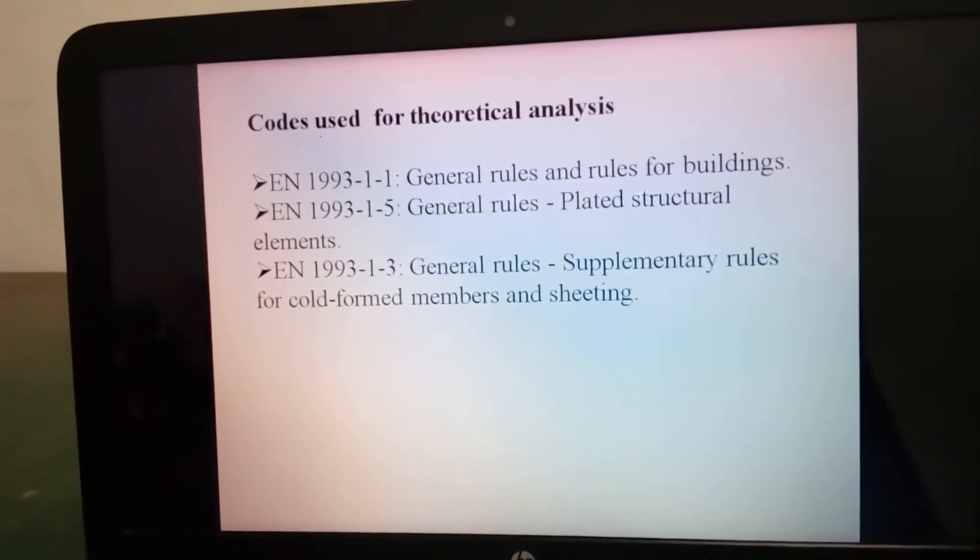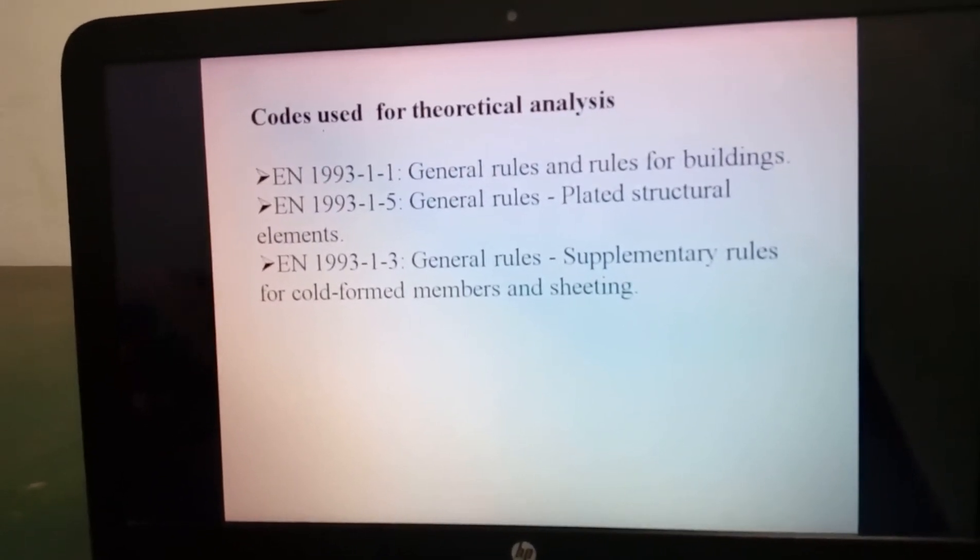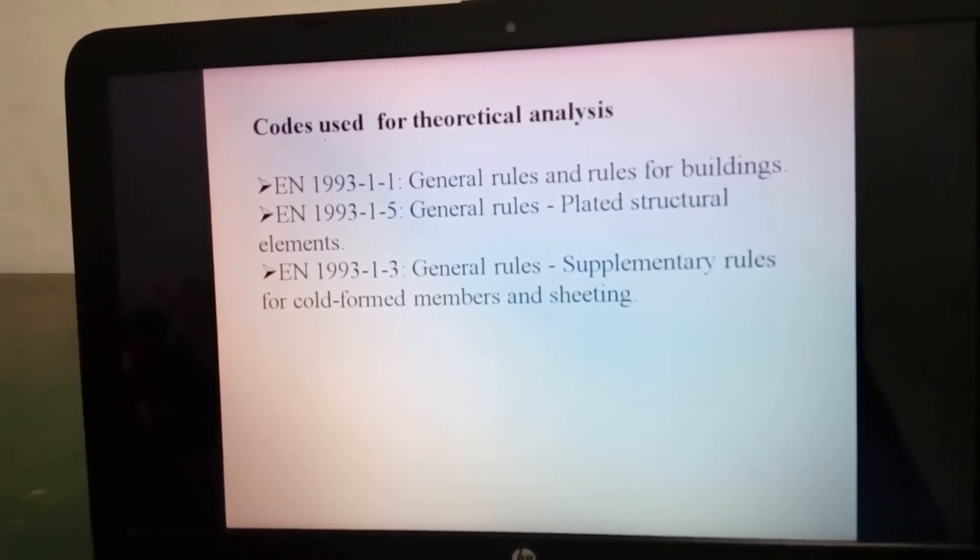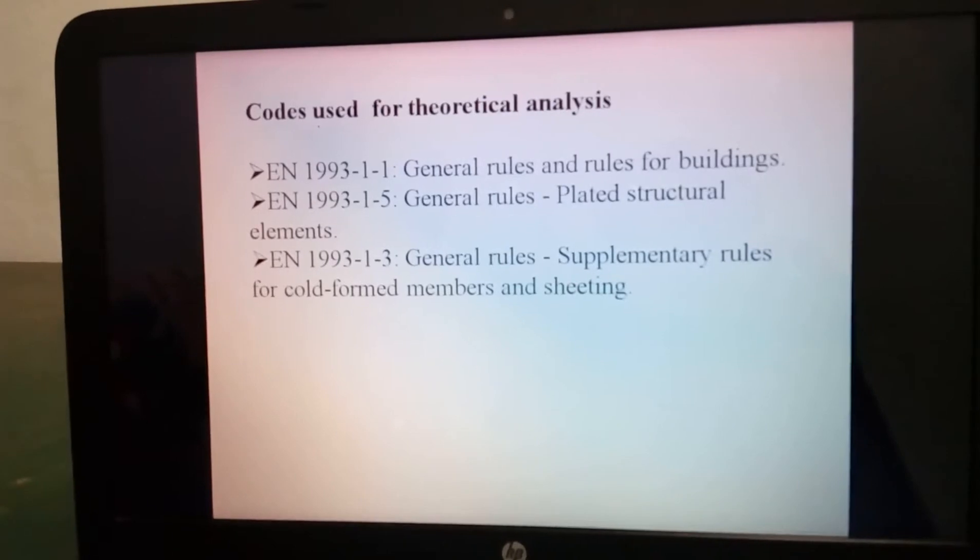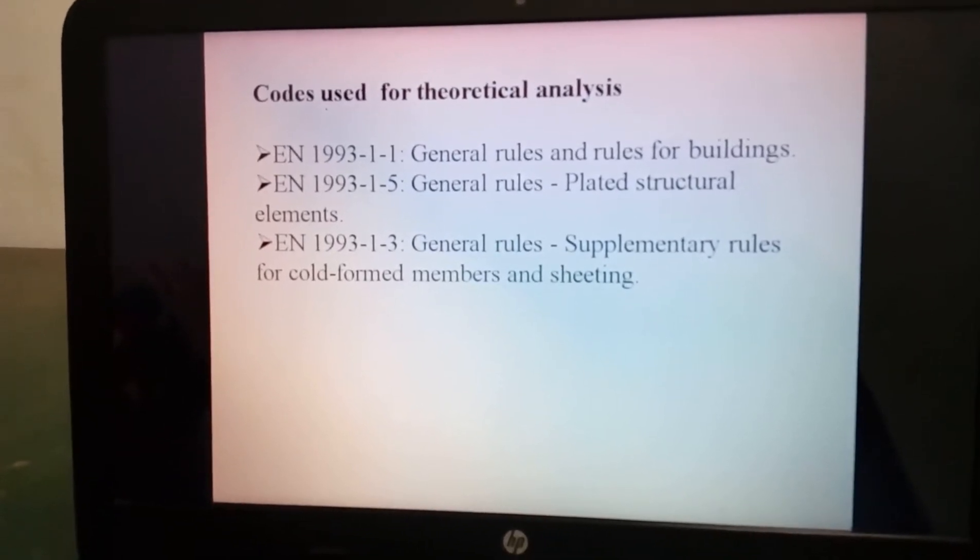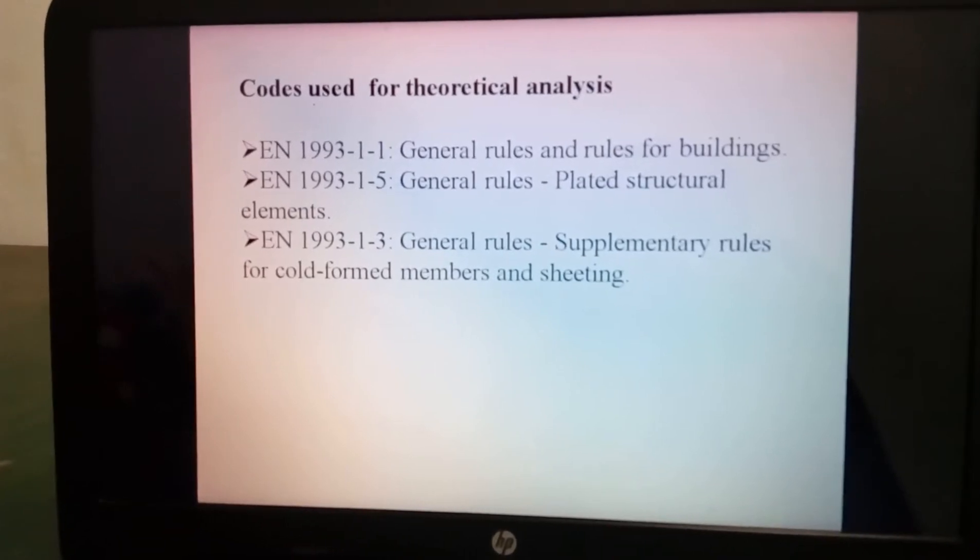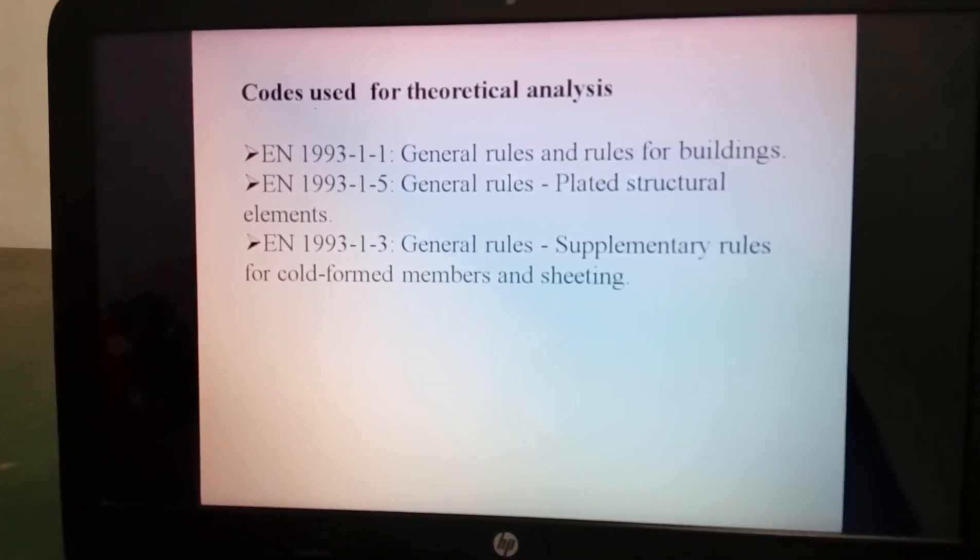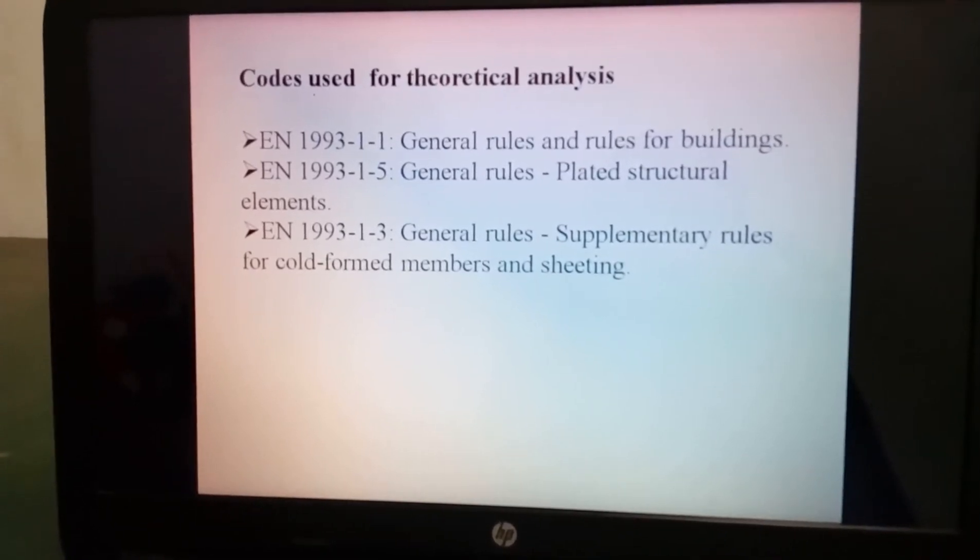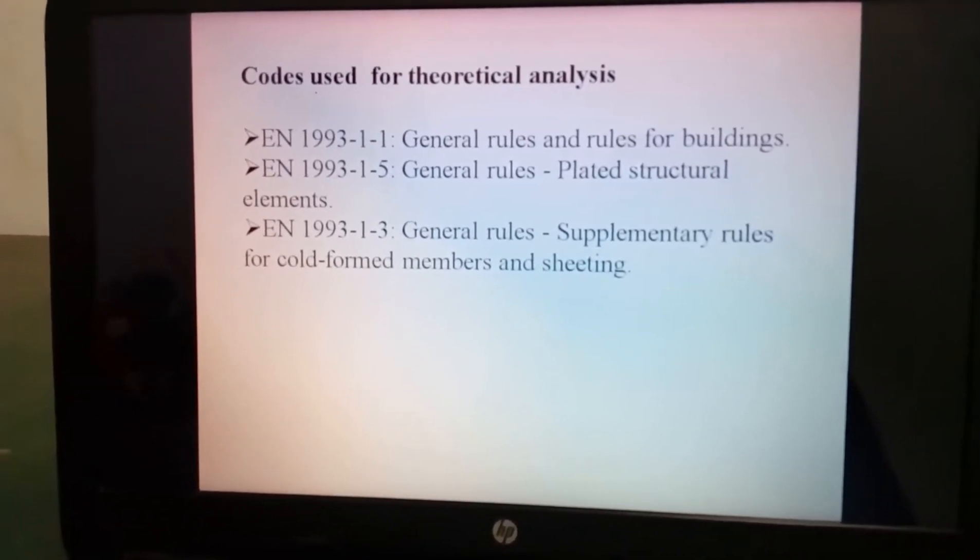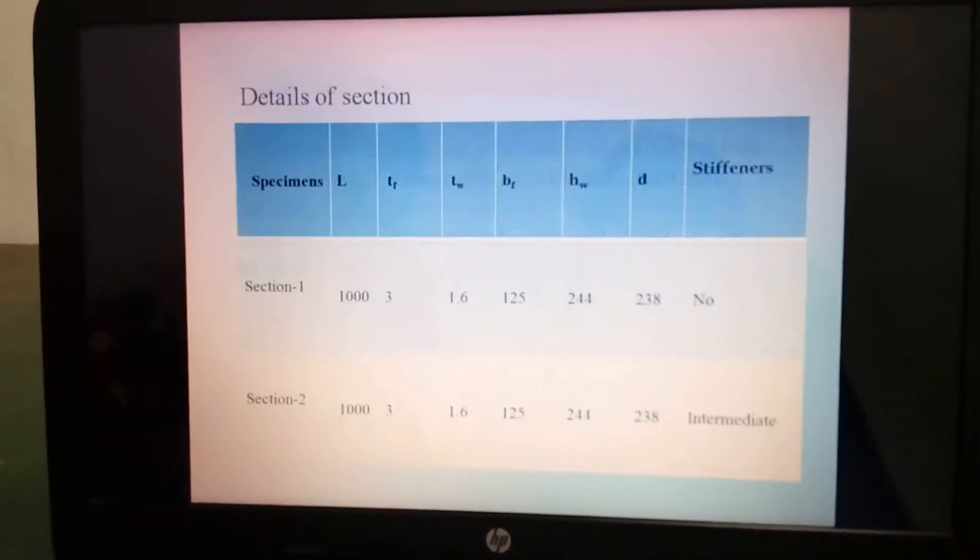The codes which are used for theoretical analysis is European code EN 1993-1 for general rules and regulations for buildings, EN 1993-1-5 general rules plated structural elements, and EN 1993-1-3 for general rules supplementary rules for cold formed members and sheeting.